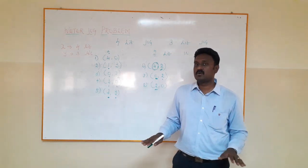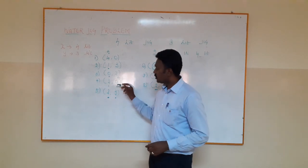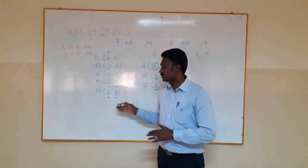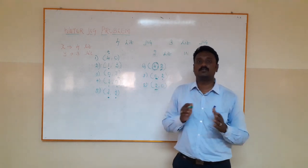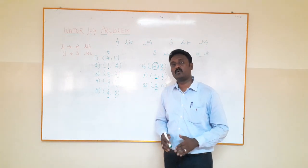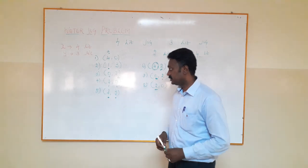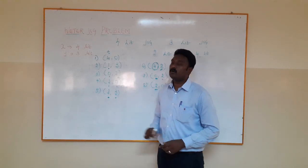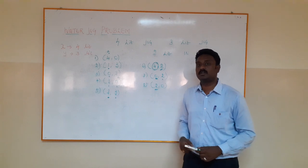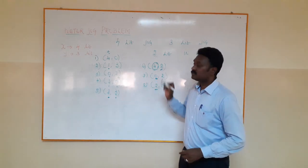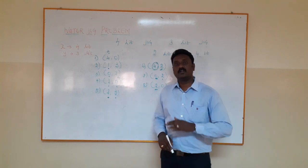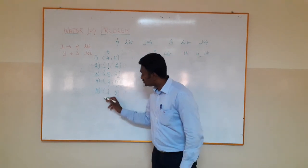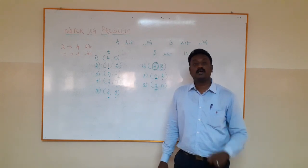Now I fill the three-litre jug again with water, so both the four-litre jug and the three-litre jug hold three litres each — state (3, 3). Then I pour from the three-litre jug into the four-litre jug. The four-litre jug is already holding three litres, so it only needs one more litre to be completely full.